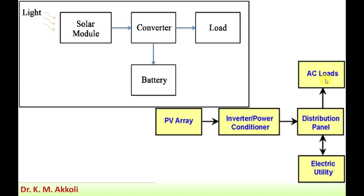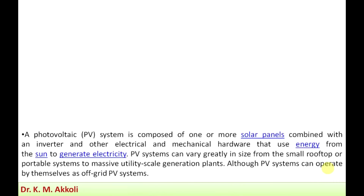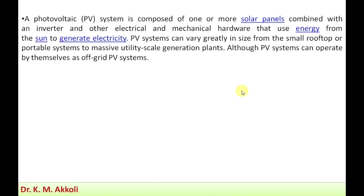From the distribution panel, the AC power can be sent directly to AC loads for application, or it can be sent to the electric utility grid where the power is distributed to various applications wherever utilization is required.